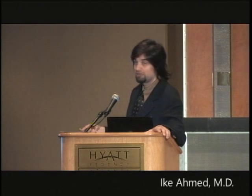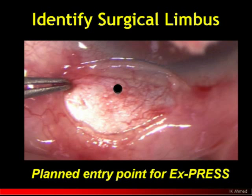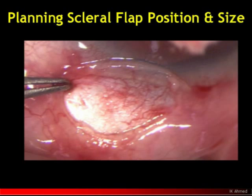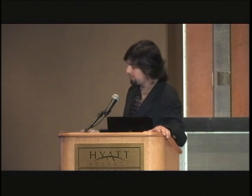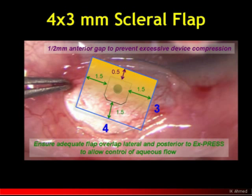We want to be at the anterior aspect of the spur for adequate placement. Even before doing the scleral dissection, that's approximately where my planned entry point will be. It's important to do this before the scleral flap is dissected because the scleral flap dimensions matter. I think it's important to ensure we have proper dimensions of the scleral flap around the implant — I prefer about a millimeter and a half around the implant to ensure adequate resistance with scleral sutures.